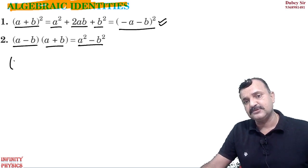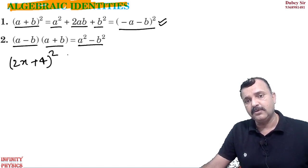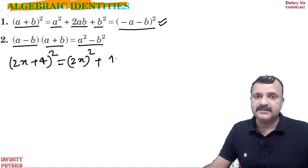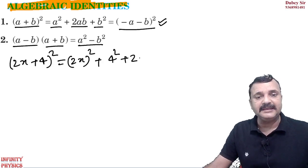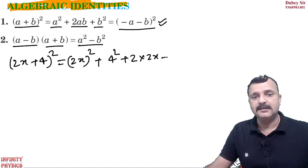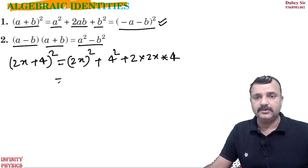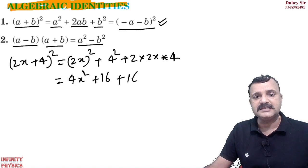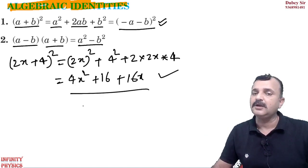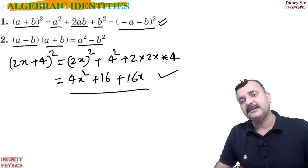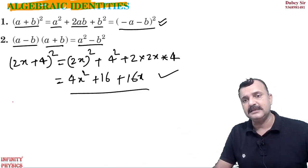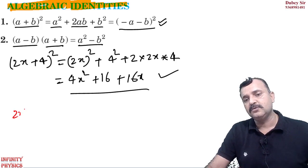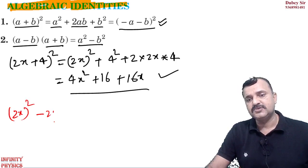How do we use this? Suppose you have been given (2x + 4) whole square. Now what do we do? a square means (2x) whole square, plus b square means 4 square, plus 2ab means 2x into 4. So you can solve it: 4x square plus 16 plus 16x.